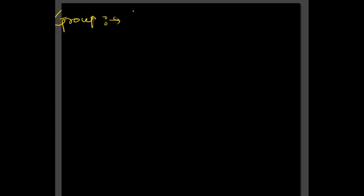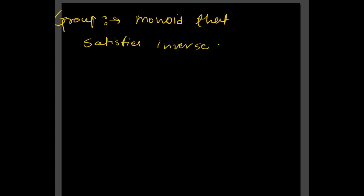Now let us define the group. A group is a monoid that satisfies the inverse property. We write it as a monoid because a group must satisfy all properties: closure, associative, and identity — and a monoid already satisfies all three. So a monoid that satisfies the inverse property is called a group. Next, we will study examples based on groups and abelian groups.